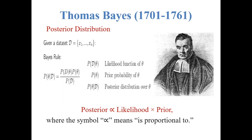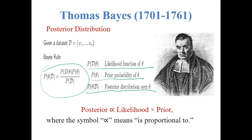For computing the posterior distribution, we use Bayes' theorem. Let D denote the data set containing x1, x2, ..., xn. The Bayes formula is: P(theta given D) equals P(D given theta) times P(theta) divided by P(D). Here P(D given theta) is the likelihood function of theta, P(theta) is our prior probability, and P(theta given D) is the posterior distribution over theta. Since the data is known, P(D) is just a constant, so we can write: posterior is proportional to likelihood times prior.